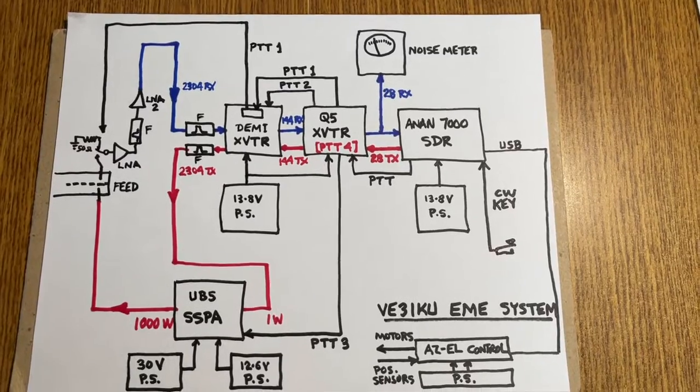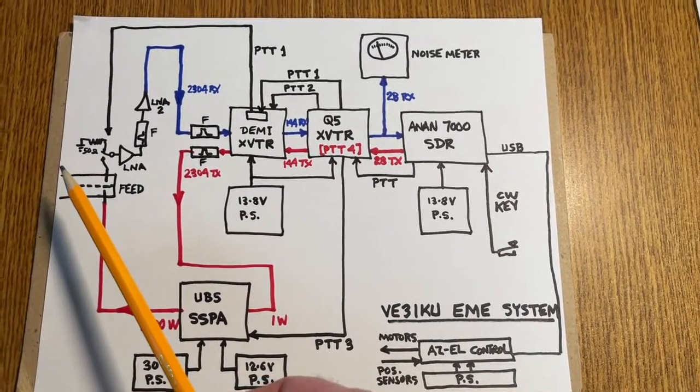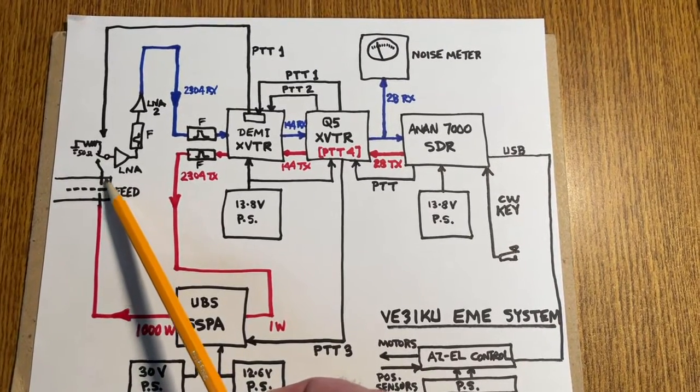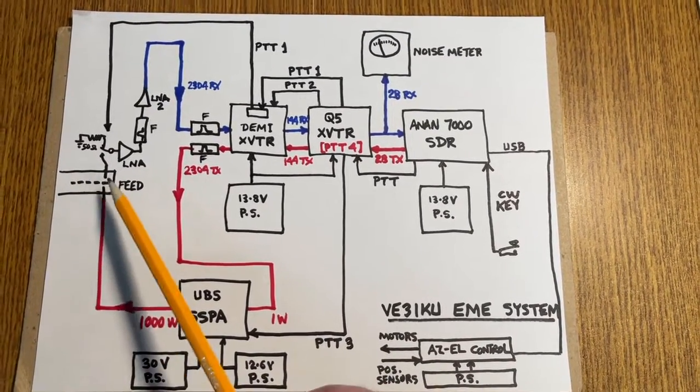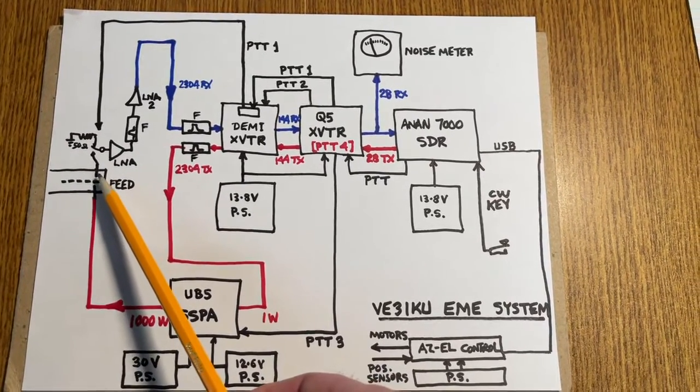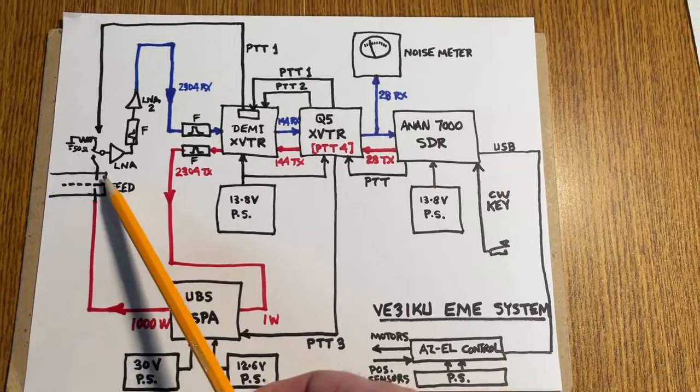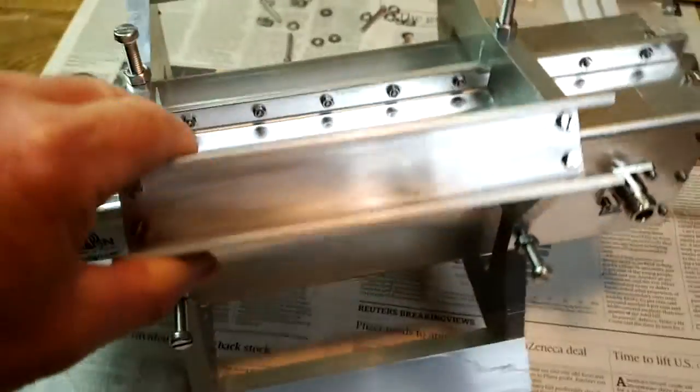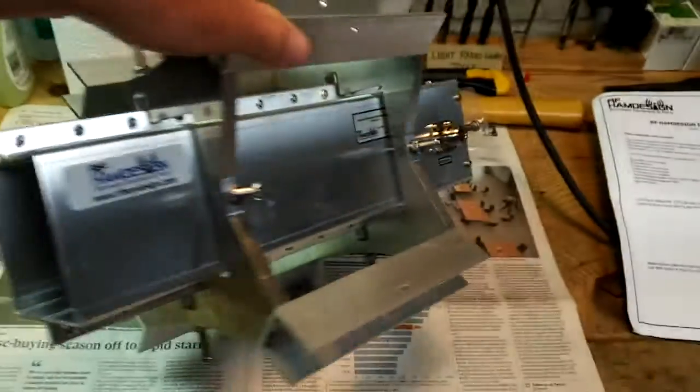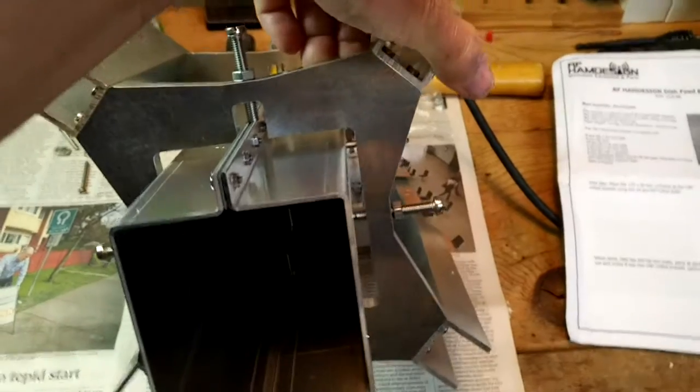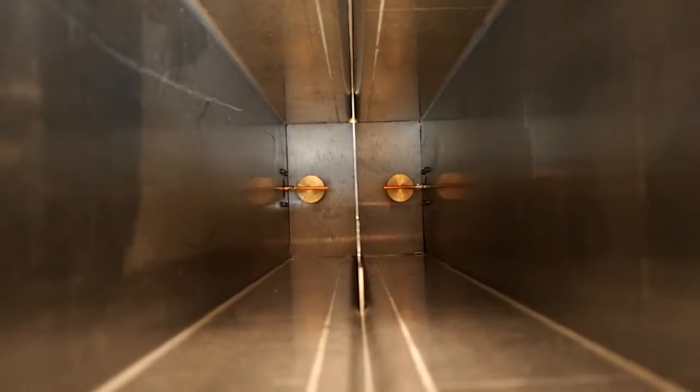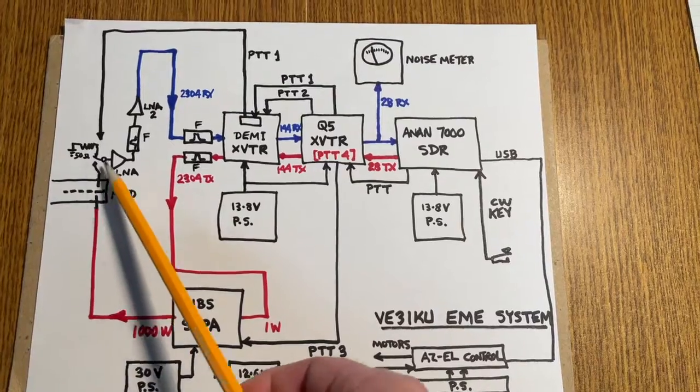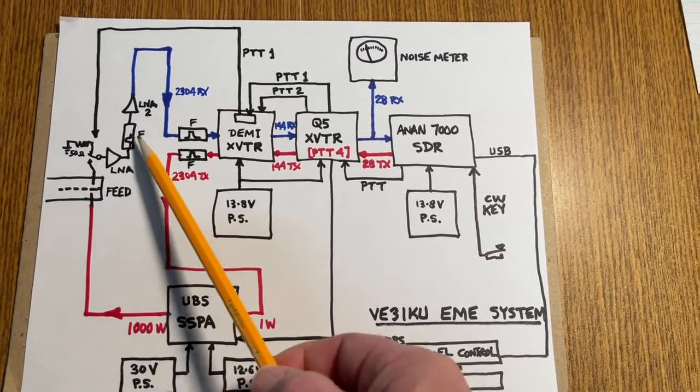Let's now go through the receive path. We'll do the switching later. So the feed is a horn feed with a probe, which is basically a horn to coaxial transition. And that signal goes to a low-noise amplifier, a filter, another low-noise amplifier.